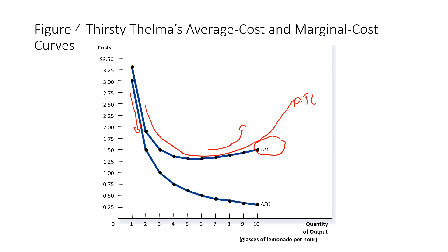The average fixed cost declines continuously because the fixed cost doesn't change with quantity. For example, if you pay 100 rupees rent and produce one unit, AFC is 100. For two units it becomes 50, for three units it becomes about 33, and so on — it declines at a diminishing rate.